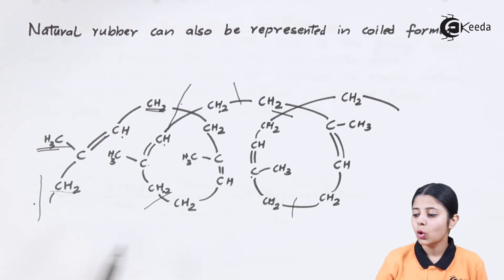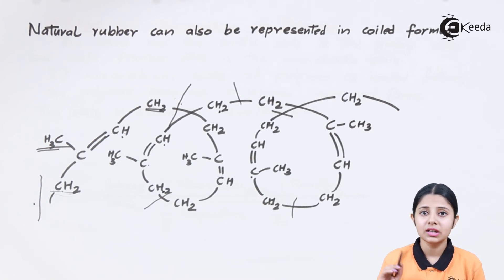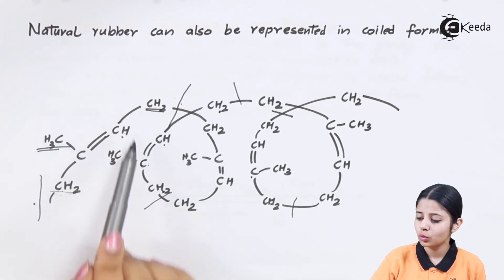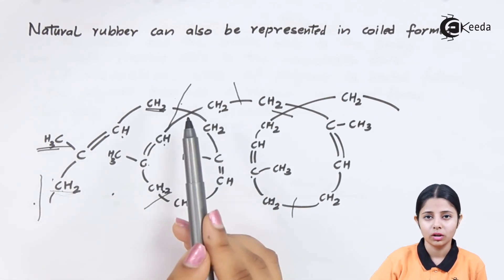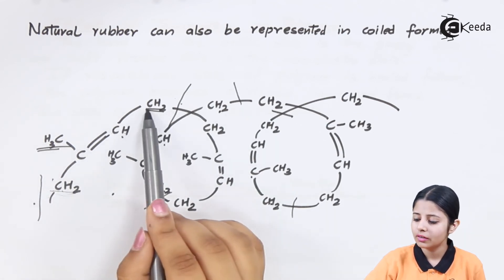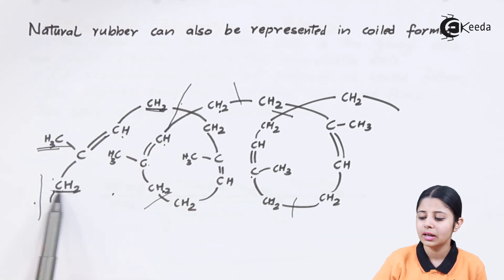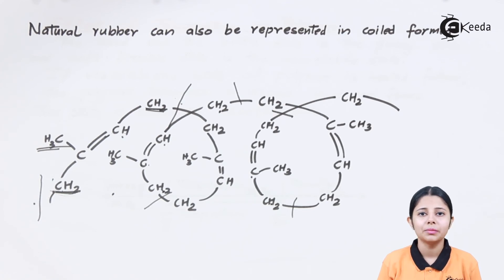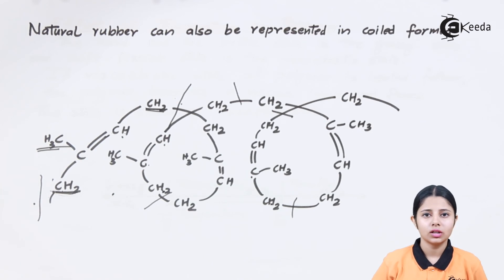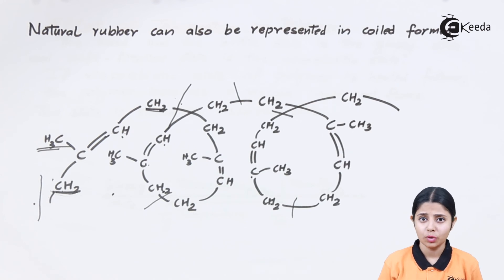This is the coiled structure of natural rubber. Always remember this structure is also in its cis format, because the CH2 groups were below — they have just turned their shapes. That does not mean the cis converts to trans. The CH2 groups remain on the same side, so even in the coiled structure natural rubber remains in its cis form. In this video we studied what natural rubber is, its structure, the cis isomer, and the coiled form.